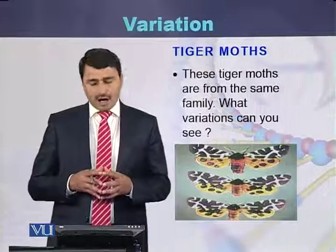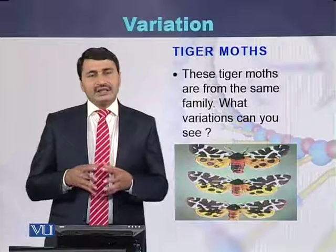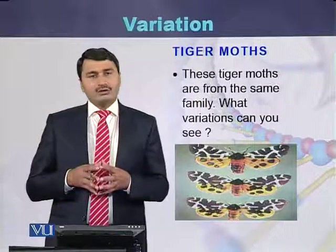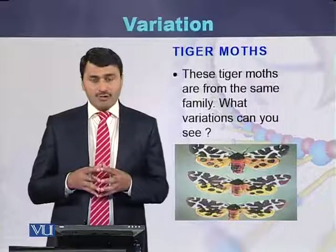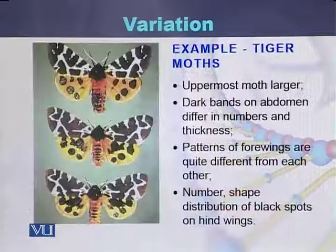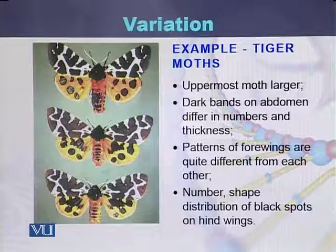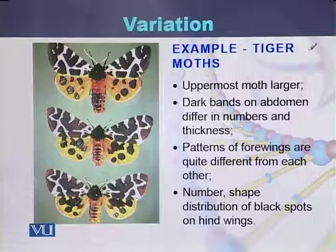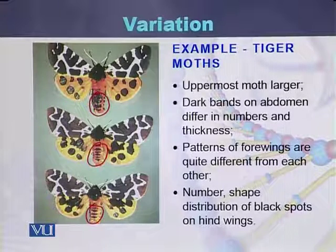Another example of variation: here we can see tiger moths. These three tiger moths belong to the same species, but we can still see variation among them. The uppermost tiger moth is larger than the lower two. We can also see that the dark bands on the abdomen differ in numerous ways among all three tiger moths.